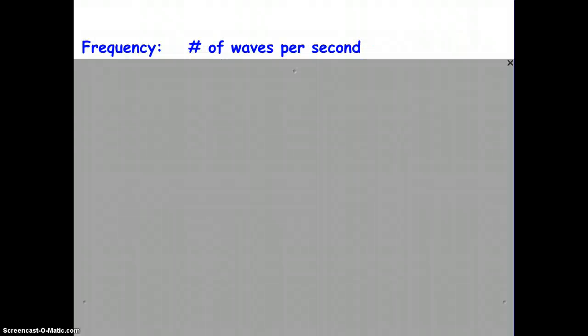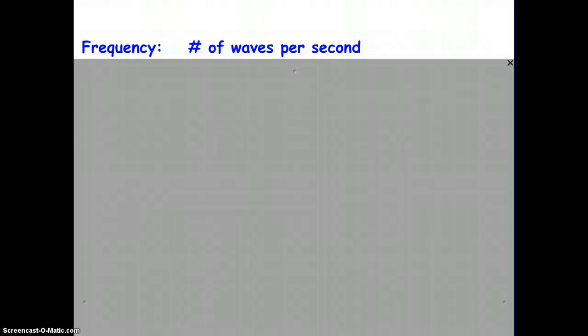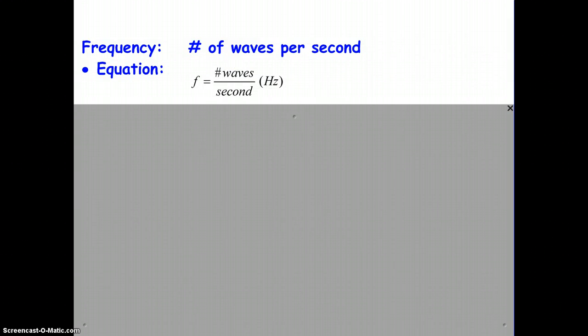Let's continue on with some other wave concepts. And let's start with frequency. By definition, frequency is the number of waves per second. Instead of the word waves, you may also hear the term oscillations. So, oscillations per second, vibrations per second. Again, you could hear frequency expressed a number of different ways. From the definition, we get the equation for frequency. The symbol for frequency is lowercase f, which would be the number of waves divided by time in seconds. And the unit of frequency is the hertz, capital H, lowercase z, named after Frank Hertz.